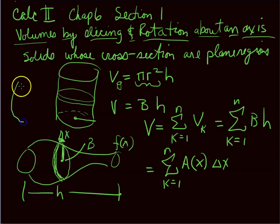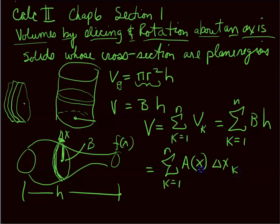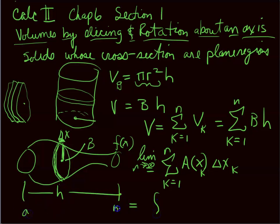We're taking a bunch of slices and stacking them all up. This depends on which piece we're talking about — the x depends on which piece. If we take the limit as n goes to infinity, we get the integral. With limits of integration a and b, this is the integral from a to b of A(x) dx. The Δx becomes our dx.